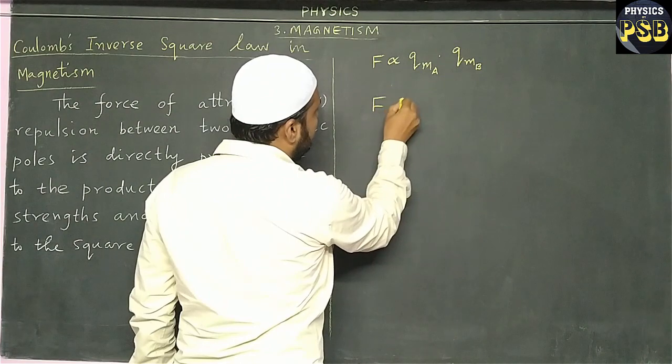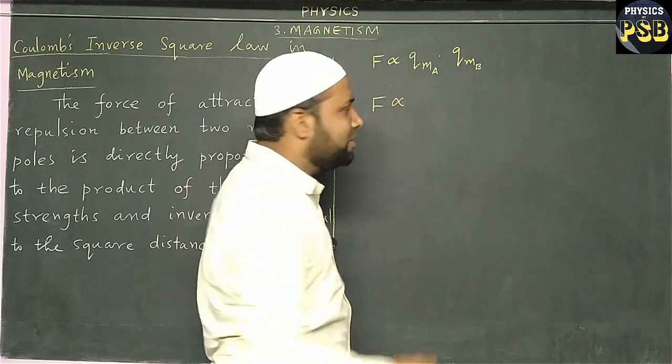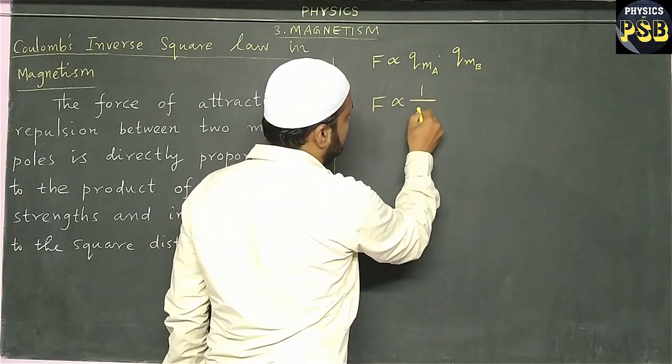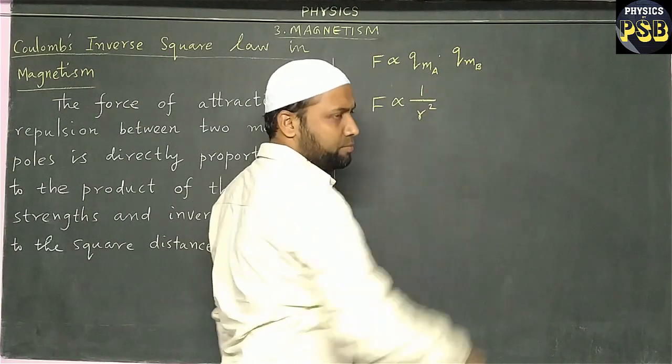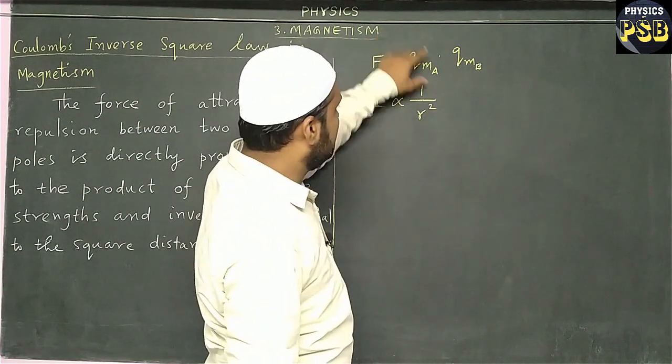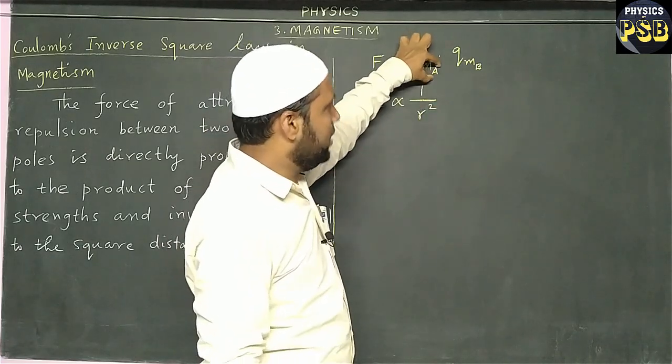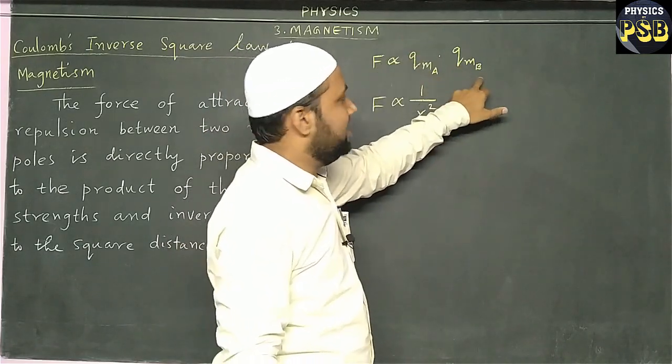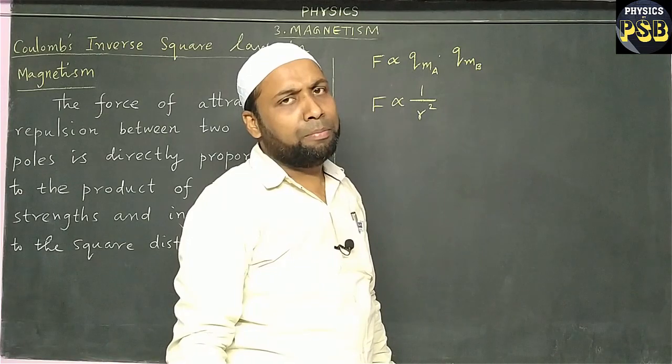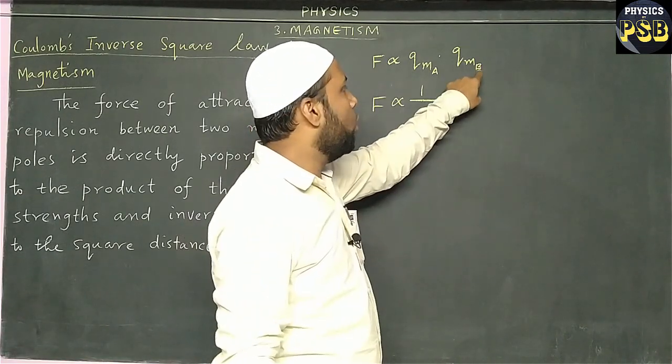And r is the distance between the poles of magnet. F is found to be inversely proportional to the square of distance between the poles, that is r. Here, q_m,a is the magnetic pole strength of pole a, and q_m,b is the magnetic pole strength of pole b.